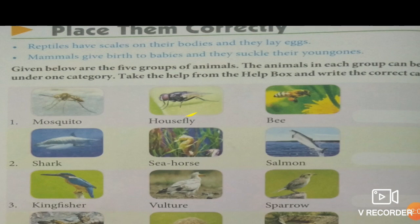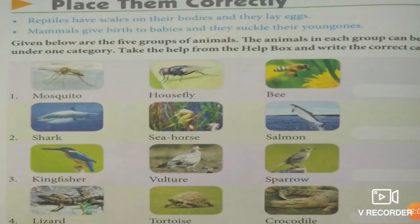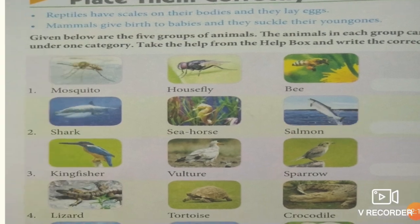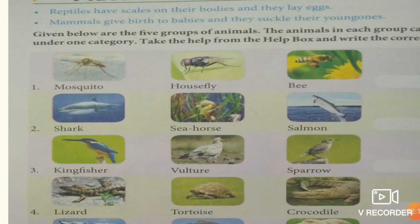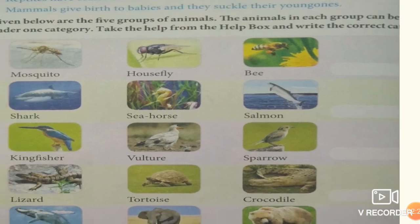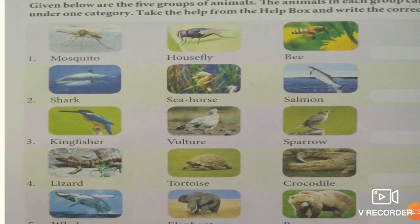Come to page number 12 — Place Them Correctly. Given below are five groups of animals; each group falls under one category. Take the help from the help box and write the correct name. The first group is mosquito, housefly, and bee — they come in the category of insects. Question two: shark, seahorse, salmon — they are fishes. Vulture, sparrow — birds.